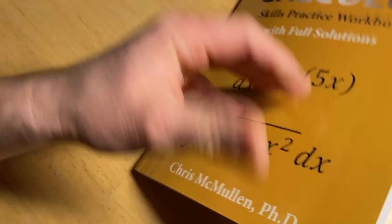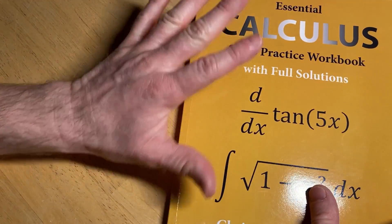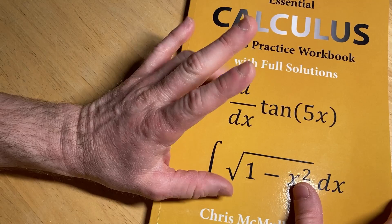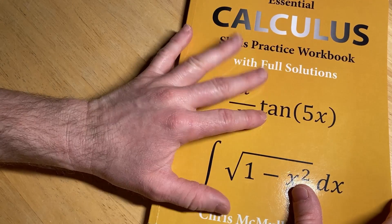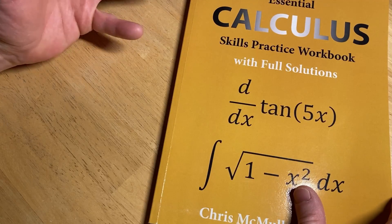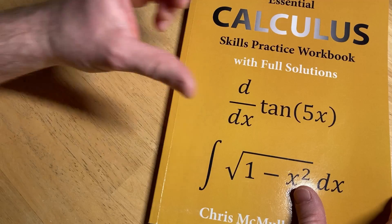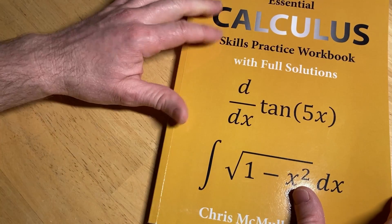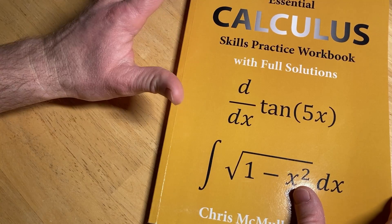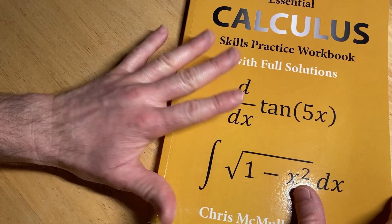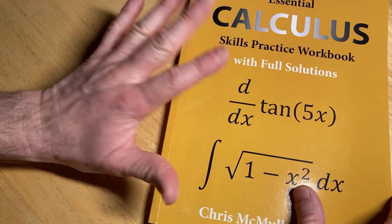So as I mentioned, this is a workbook. The difference between this and a textbook is that this doesn't have as much content. So like if you buy a used copy of Stewart's calculus, one of those big, thick calculus books, that has way more content than this does. This has a lot less content.